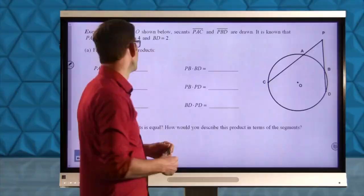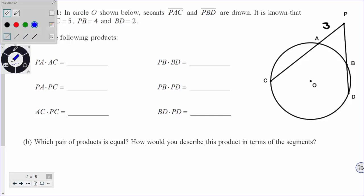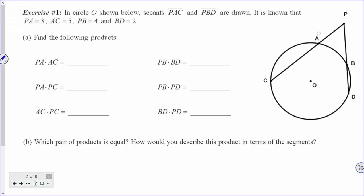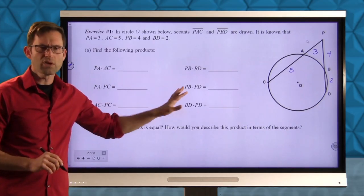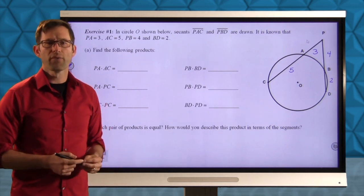Exercise number one. In circle O shown below, secants PAC and PBD are drawn. It is also known that PA is 3, AC is 5, PB is 4, and BD is 2. Letter A asks us to find the following products. Pause the video now and go ahead and find these products.